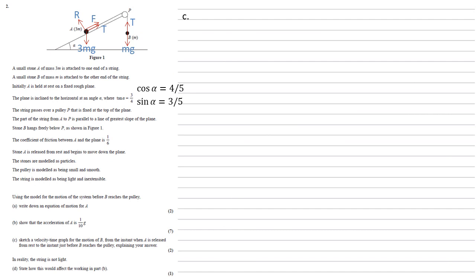For part c, we need to sketch a velocity time graph for the motion of b from the instant when a is released from rest to the instant just before b reaches the pulley and explain our answer. So we know that the acceleration is a tenth g. So this means that the acceleration of b is constant because a tenth g is constant. So if the acceleration is constant, our velocity time graph is going to be a straight line as this one.